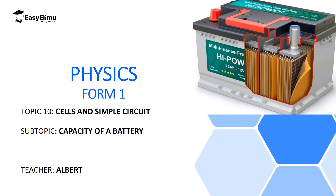In this lesson we are going to discuss the capacity of a battery. The capacity of a battery is the amount of energy a battery can store. As you can see on the screen, this battery has its capacity written on it: 75 ampere-hour, and it can supply 12 volts. So 75 ampere-hour is the amount of current this battery can store or supply.